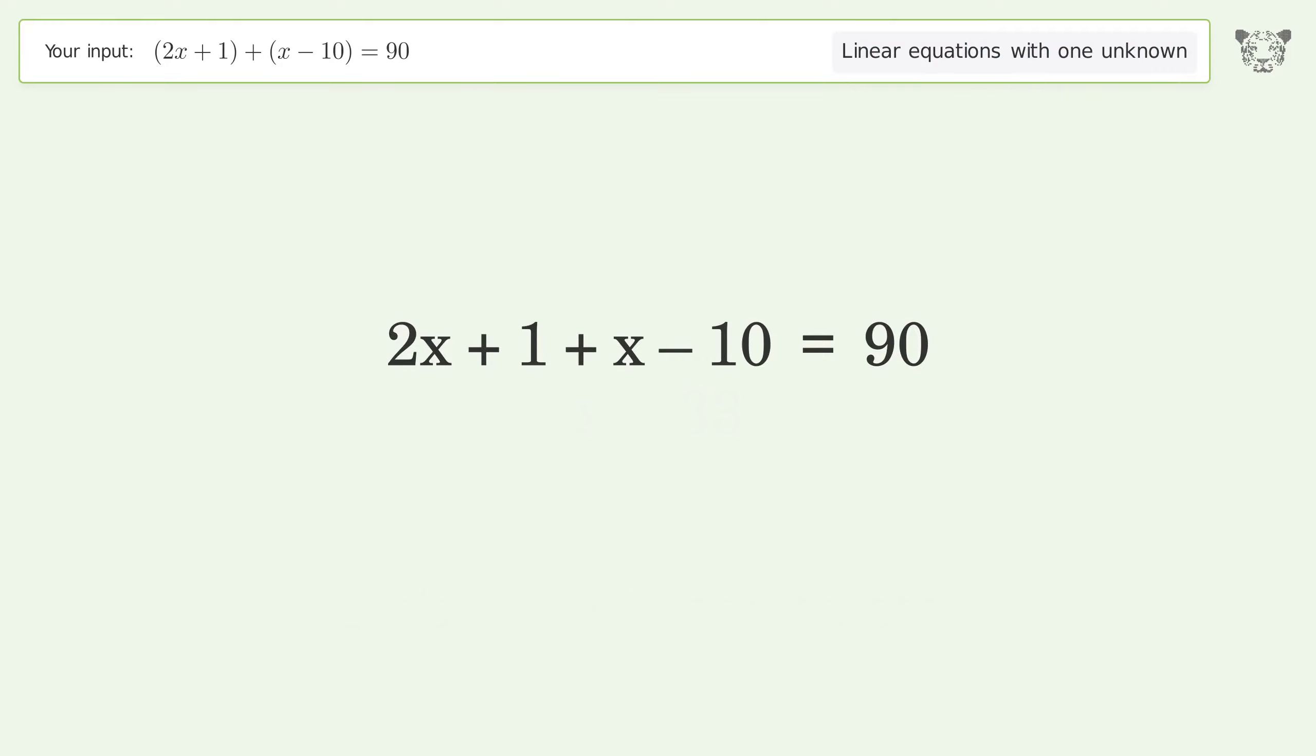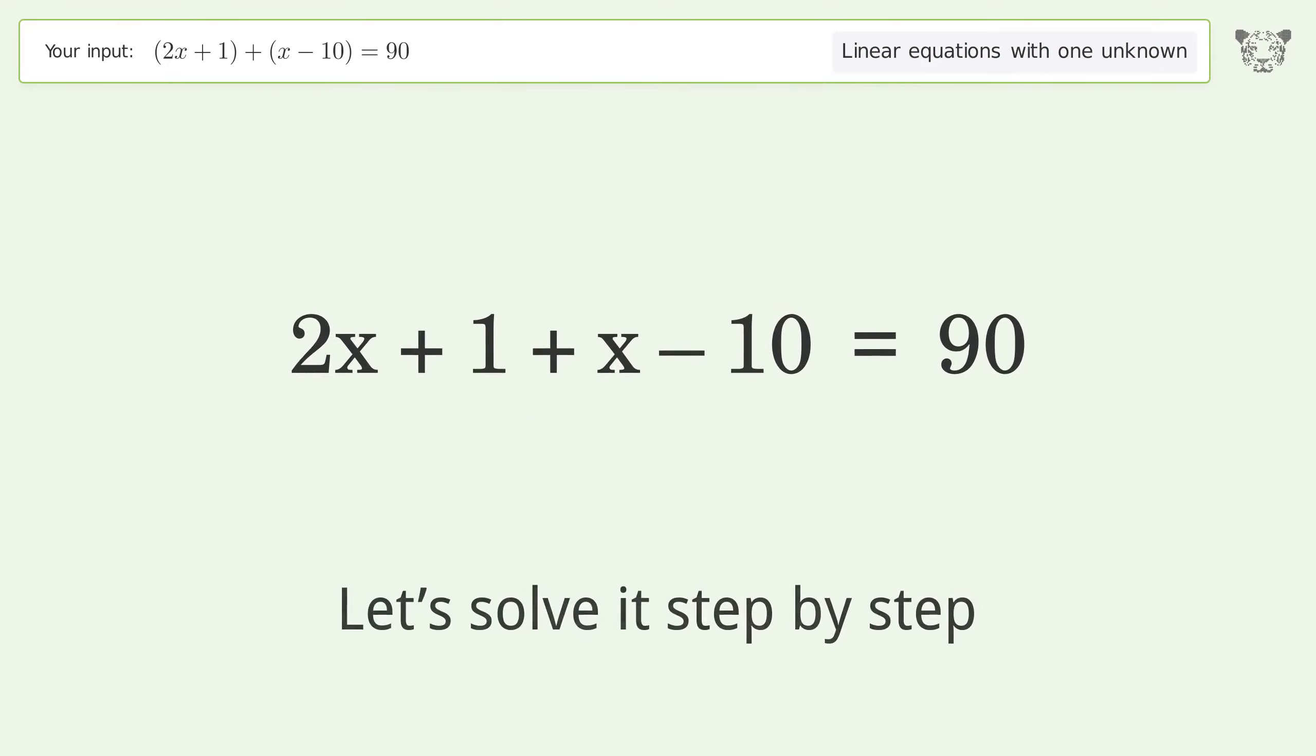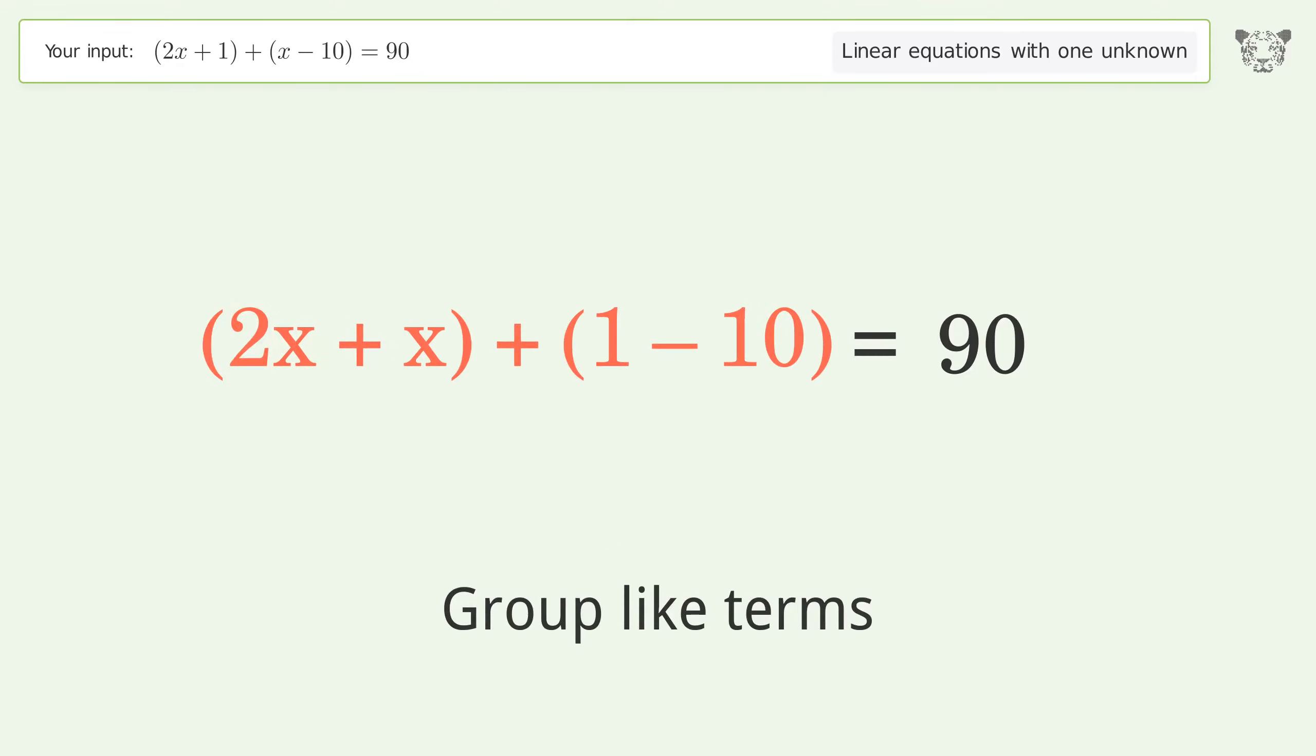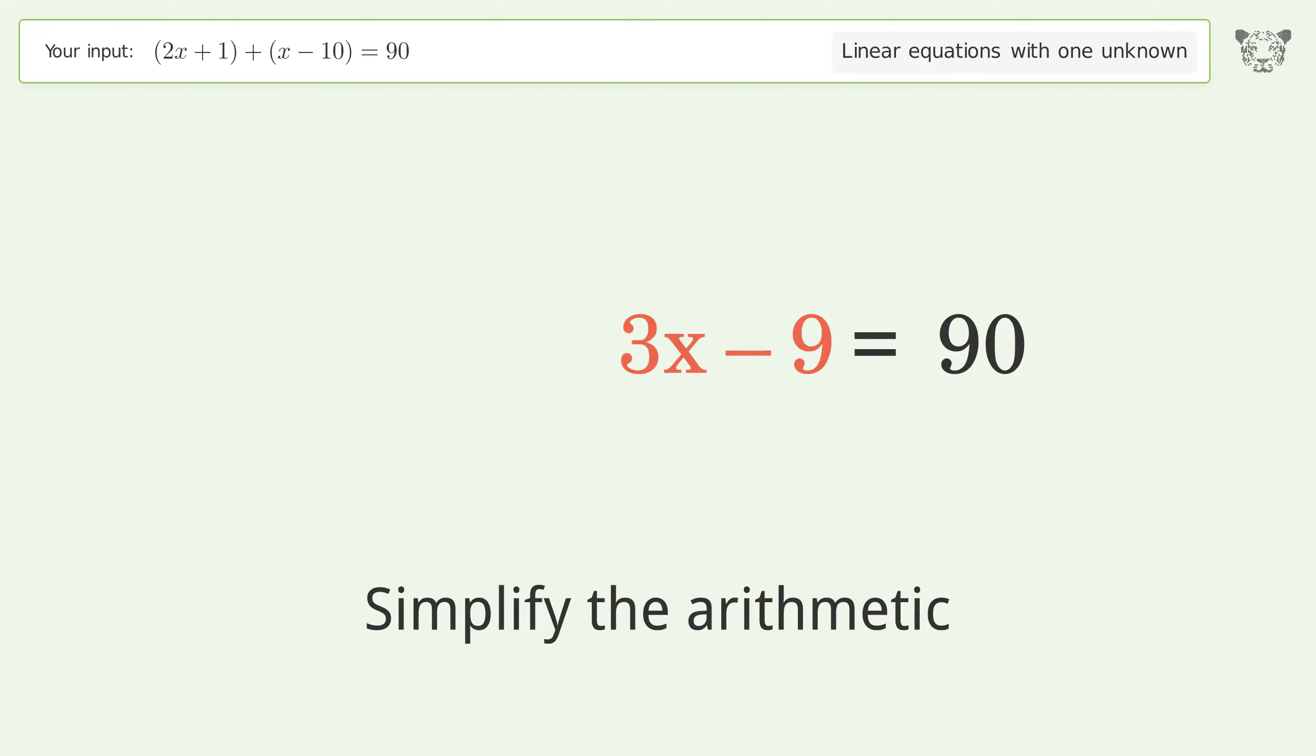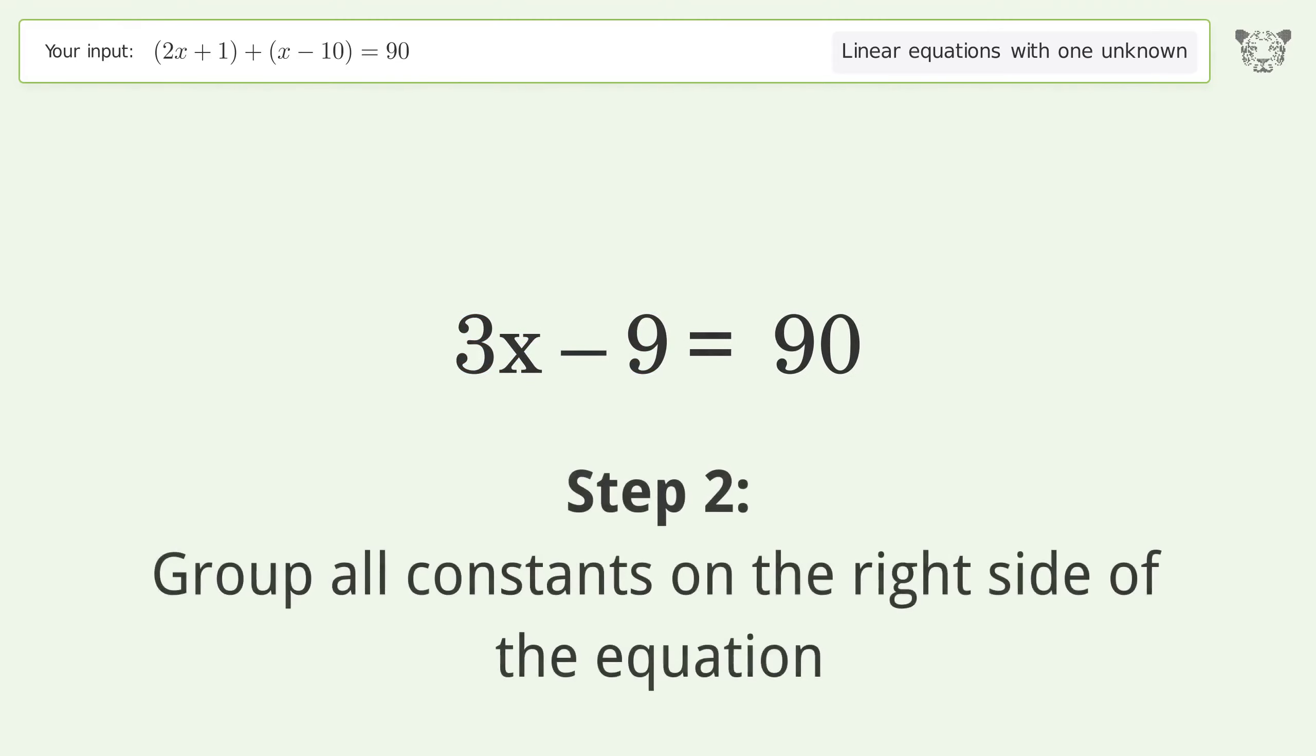Let's solve it step by step. Simplify the expression. Group like terms, simplify the arithmetic. Group all constants on the right side of the equation.